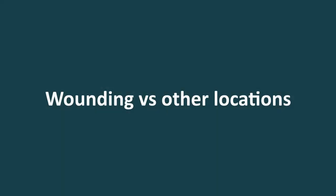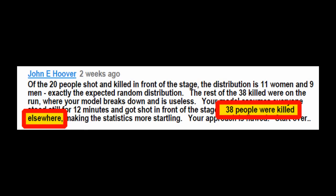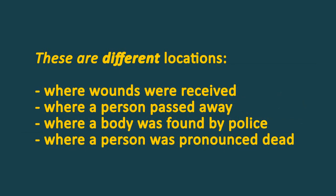Now let's go over two general points that the author of these claims misunderstands. When discussing wounds, the author refers to locations where people were killed. These are not the same thing. These are all different locations: where wounds were received, where a person passed away, where a body was located by police, and where a person was pronounced dead. We're discussing wounds, so we are only concerned with the first case, not case 3 or sometimes 4, which is shown on police maps.